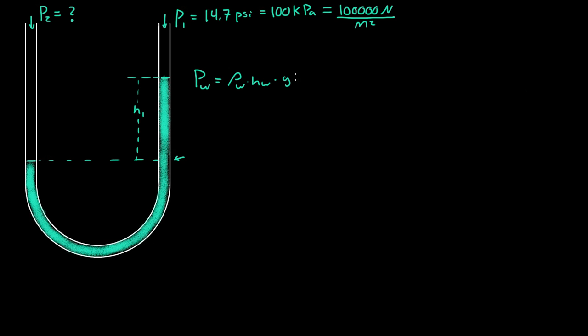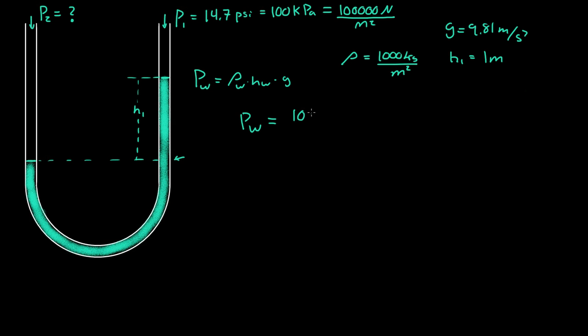That will give us the pressure of the water. So if the density of water is equal to 1,000 kilograms per meter cubed, and the height is equal to one meter, and g is equal to 9.81 meters per second squared, then the pressure of the water is equal to 1,000 kilograms per meter cubed times one meter times 9.81 meters per second squared, which gives us 9,810 kilograms.